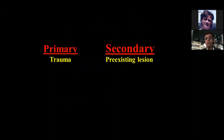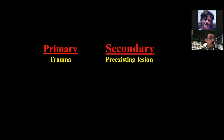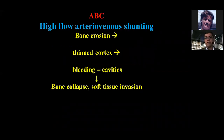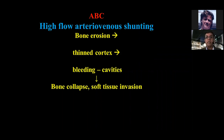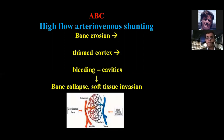It is called primary or secondary. Primary means there is no pre-existing bone lesion — the lesion develops on its own. Secondary means there is a tumor or lesion already, and then the aneurysmal bone cyst develops inside it. The theory for both is the same: high flow between arteries and veins causes bone erosion, thinning of the cortex, bleeding, cavity formation, bone collapse, and soft tissue invasion.